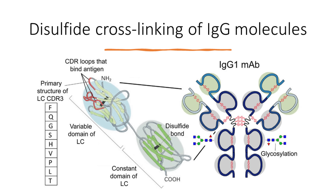Immunoglobulin G, or IgG, is a type of antibody present in our immune system to protect us against bacterial or viral infection. If we look closely at the structure of this antibody, we will find many inter-cross-linked disulfide bonds. These interconnected disulfide bonds hold IgG in its shape and allow it to perform its function.